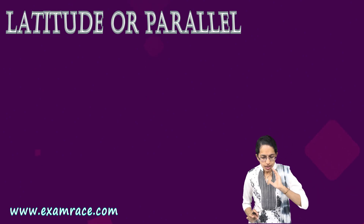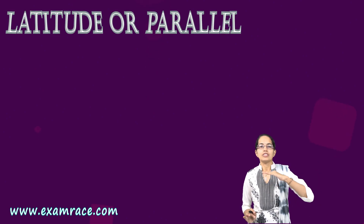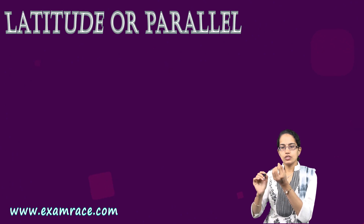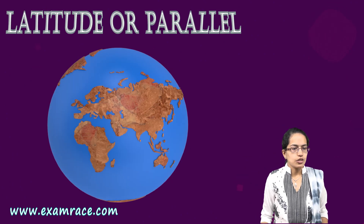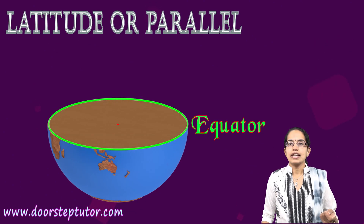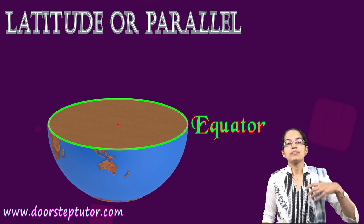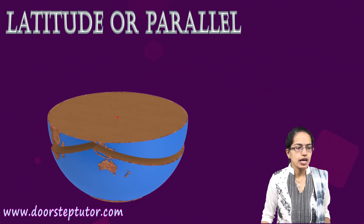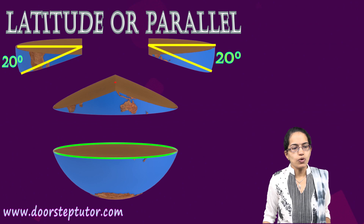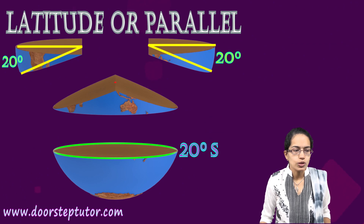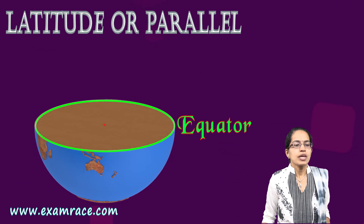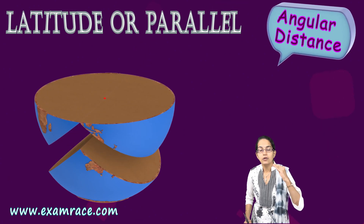Latitude, which is also known as a parallel, is very important. It is an angular distance from the center of the earth. If we take the equator as reference and want to understand 20 degrees south, we draw 20 degrees on either side and connect them to form a 20-degree south line. Similarly, we can draw 20 degrees north, and so on.